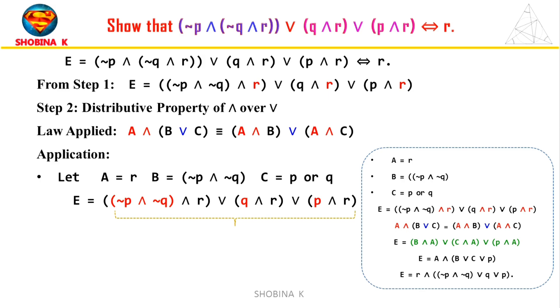Now, look at the expression. Here, A is R, and B is (not P and not Q), and C is either Q or P depending on how we group the terms. On applying the property, we rewrite the expression as R and ((not P and not Q) or Q or P).